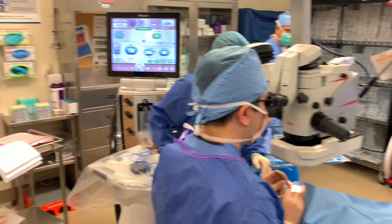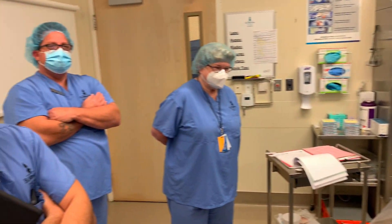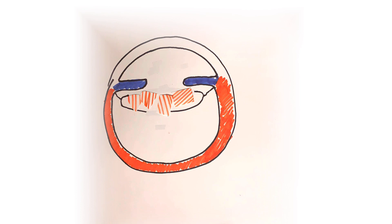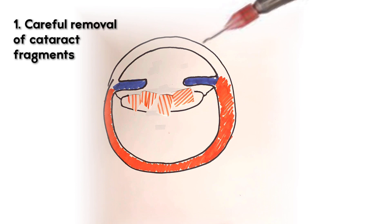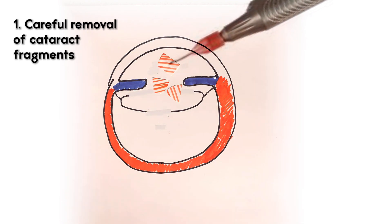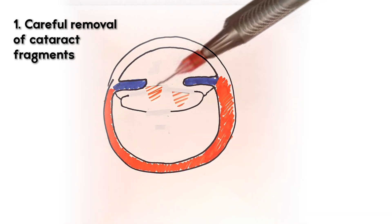Currently in 2021, the surgical management of capsular rupture begins by removal of as much of the cataract fragments as can be done safely without damaging the retina. And any vitreous that shifts to the front of the eye is also removed by anterior vitrectomy.